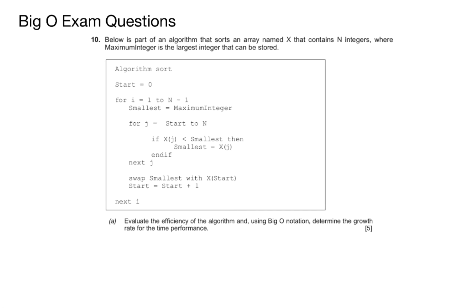In the first question it says evaluate the efficiency of the algorithm and using Big O Notation determine the growth rate for time performance, and this is worth five marks. So in step one I said work out the number of loops. In step two I said work out the operations that the question asks for, and these operations could be anything from addition to subtraction, multiplication, assignment, or comparison operators such as greater than or less than.